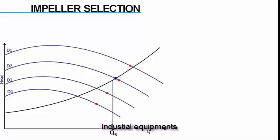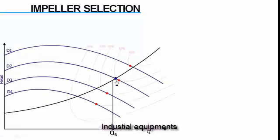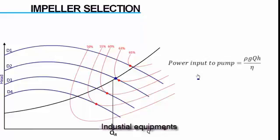In the same graph, we can represent ISO efficiency curves. So efficiency at the operating condition also can be determined. The required shaft power can be calculated using this equation. This will lead to proper motor selection.